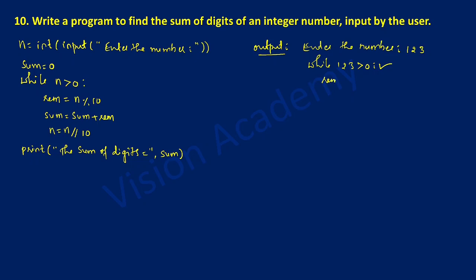First statement: rem = 123 modulo 10. Modulo always returns the remainder. 10 times 12 is 120, so 3 is the remainder — rem is equated to 3. Next, sum = sum + rem. Sum is 0 for the first iteration, so 0 plus 3 equals 3, which is equated to sum.